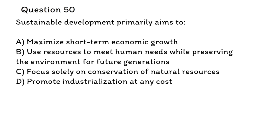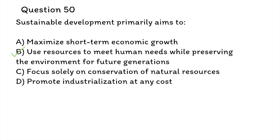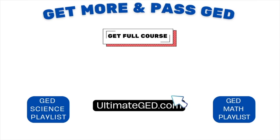Question 50: Sustainable development primarily aims to A. maximize short-term economic growth, B. use resources to meet human needs while preserving the environment for future generations, C. focus solely on conservation of natural resources, D. promote industrialization at any cost. The correct answer is B — use resources to meet human needs while preserving the environment for future generations. The goal is to use resources in a way that meets the needs of the present without compromising the ability of future generations to meet their own needs.